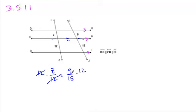You can reduce your fractions here. 3 goes into 9 three times, 3 goes into 15 five times. 3 times 12 is 36 over 5, and that is your value for z.